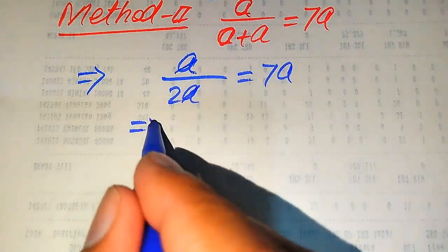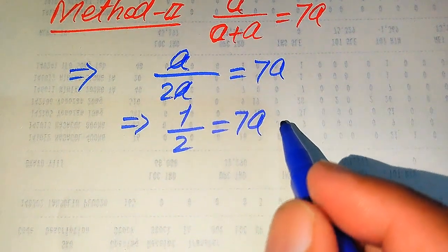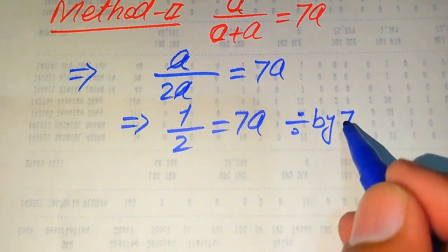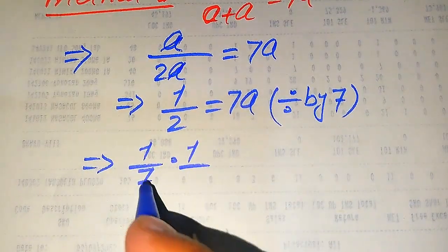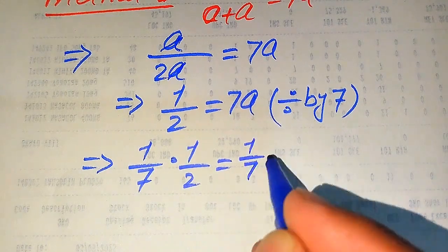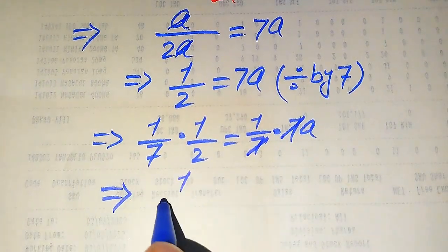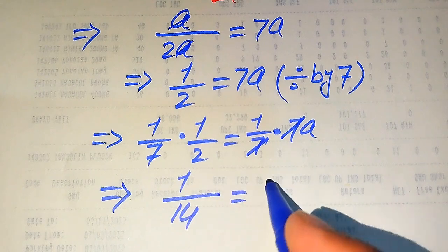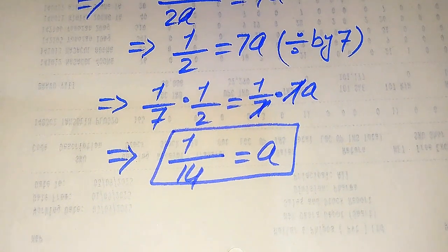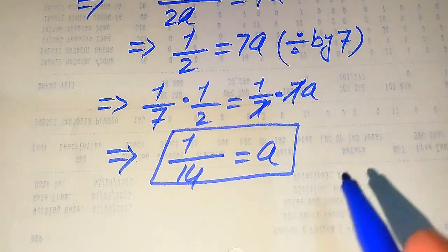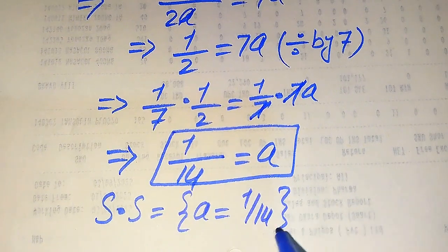We cancel the a terms in the numerator and denominator to get 1 divided by 2 equals 7a. To solve for a, we divide both sides by 7: (1/7) times (1/2) equals (1/7) times 7a. The 7s cancel on the right, giving us 1 divided by 14 equals a. So a equals 1/14, which matches what we found in the first method and is verified as the solution set.